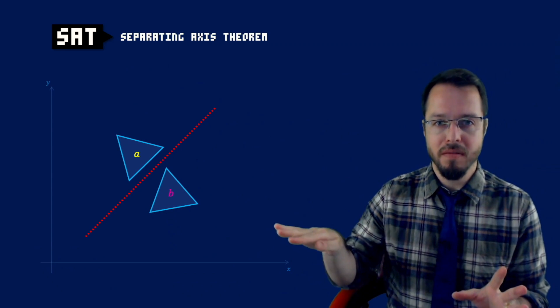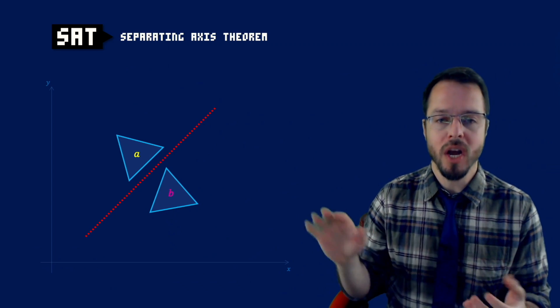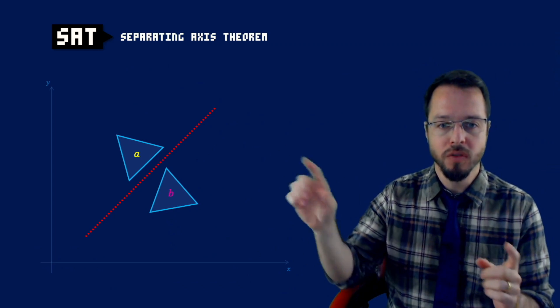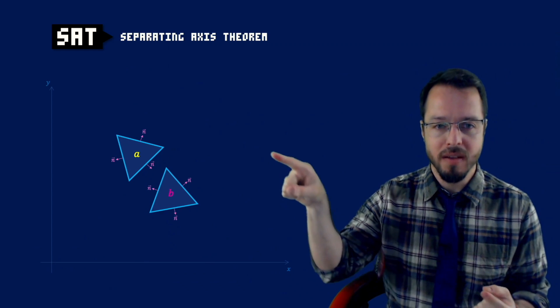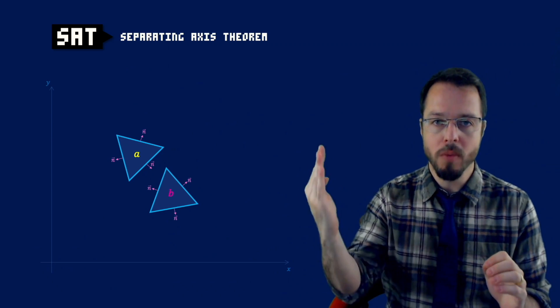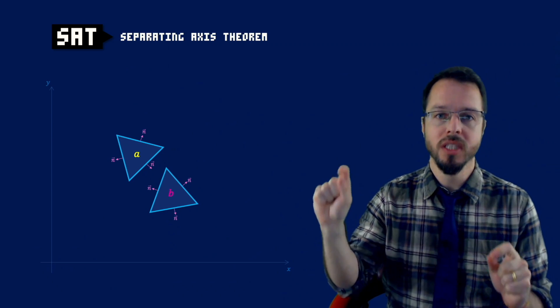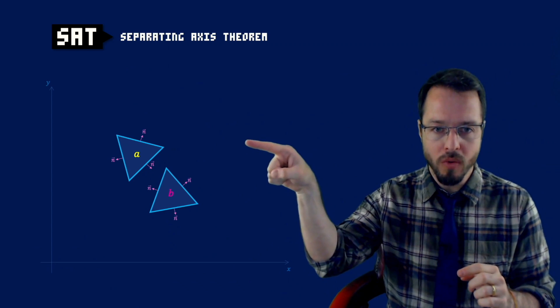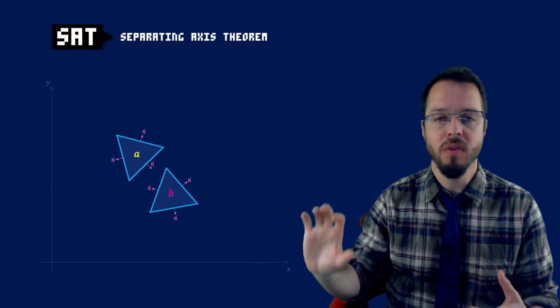Mathematically, how do we find this axis of separation? We have an infinite number of axes. The first question I asked myself when learning this algorithm was: what axes do I have to test to find the gap? The answer is: we are going to use the normals of the edges of our polygon. So if we have our polygons, we have the perpendicular vector for each one of the edges — we are going to use those normals as the testing axes.